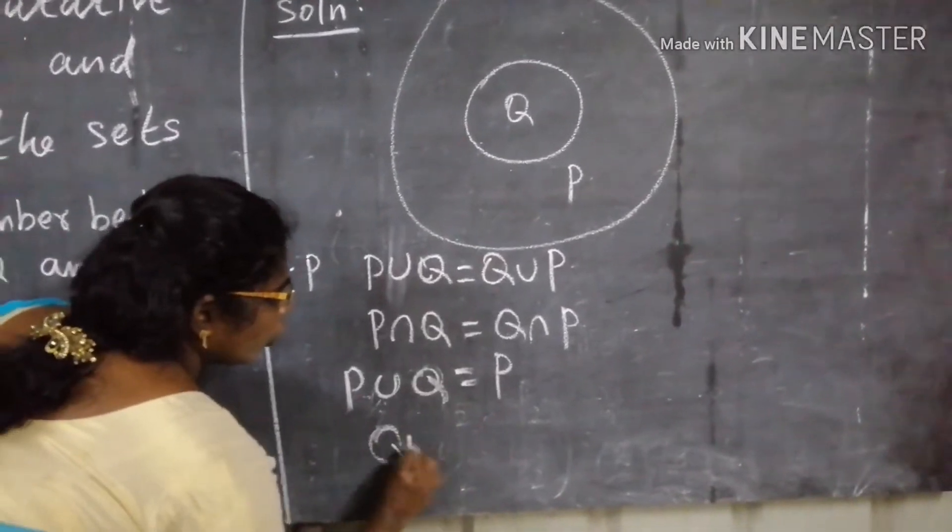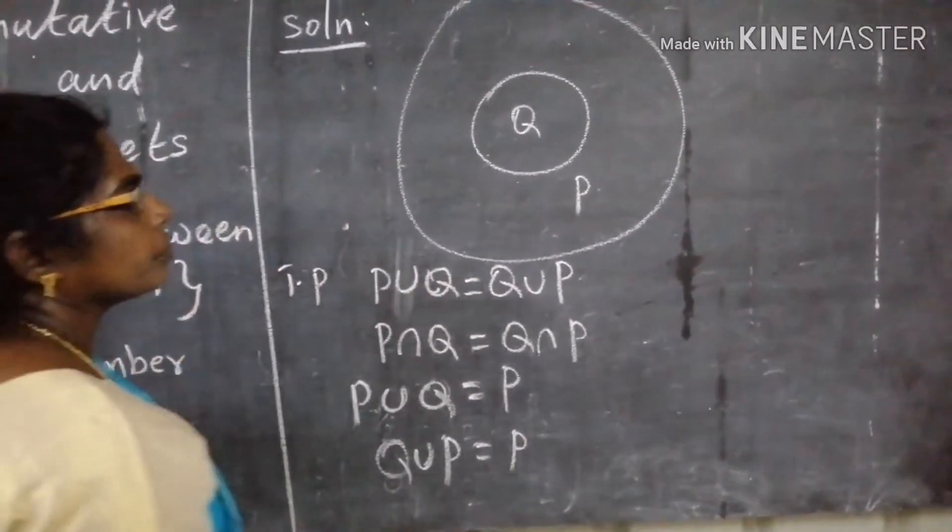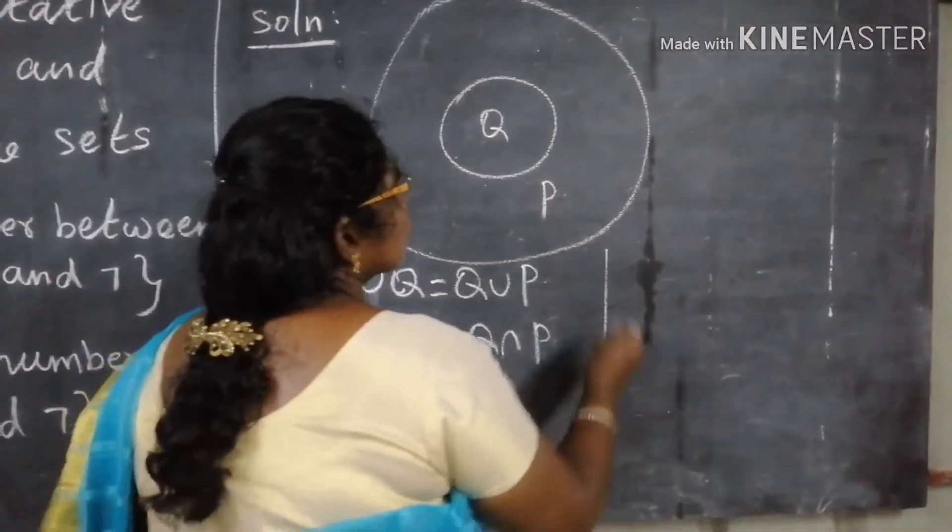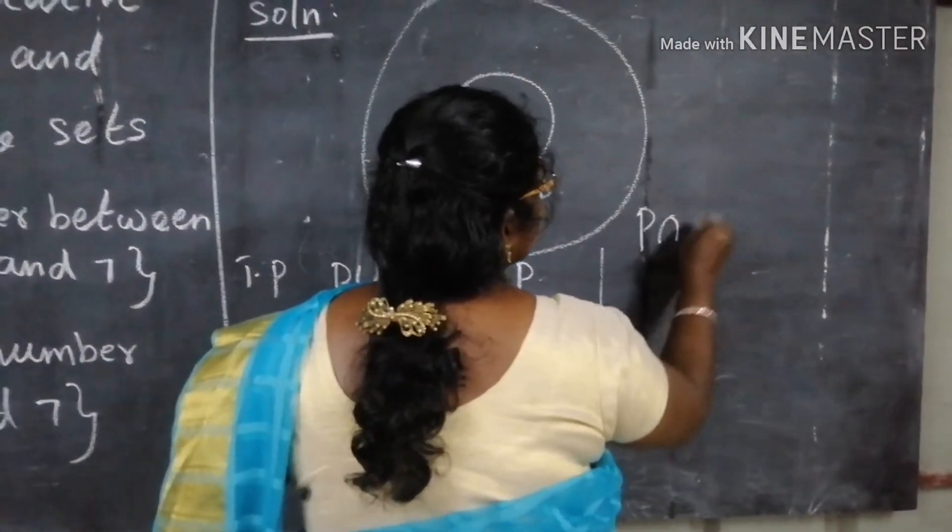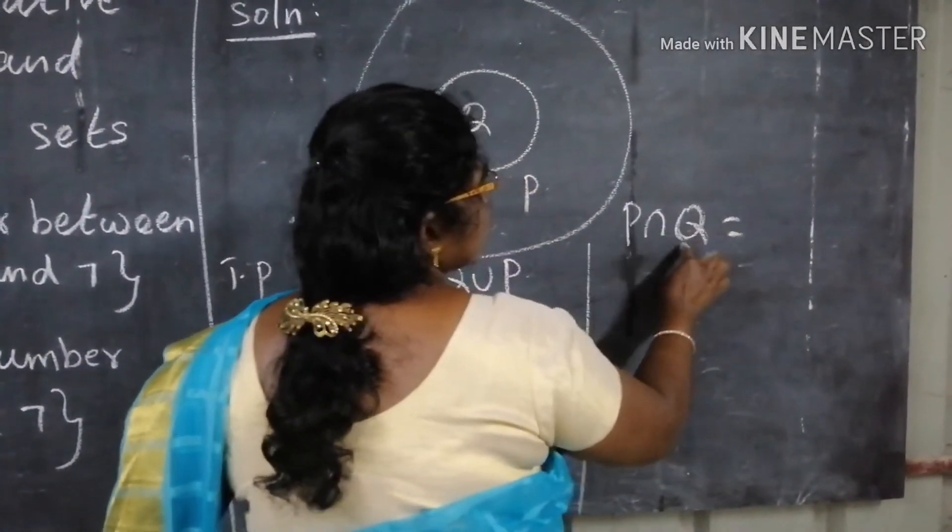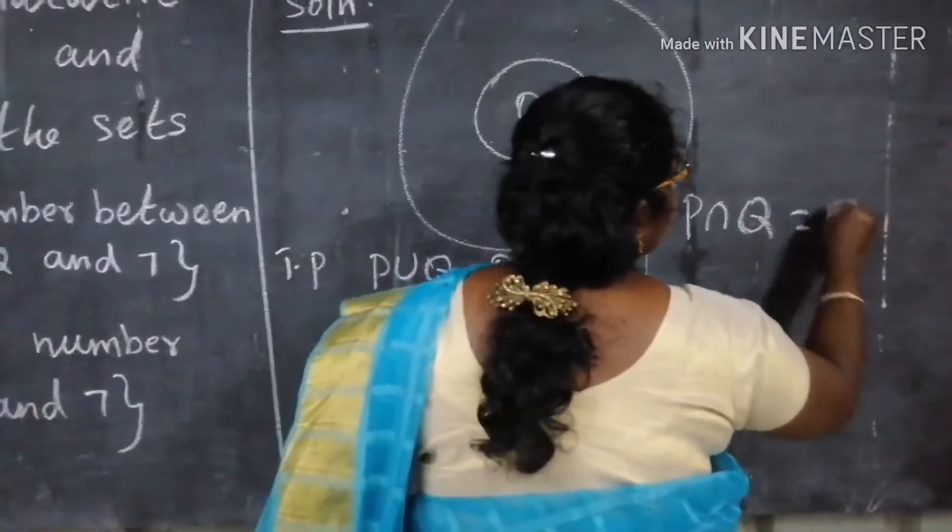According to Q union P is equal to P. This is the large set. Thank you.